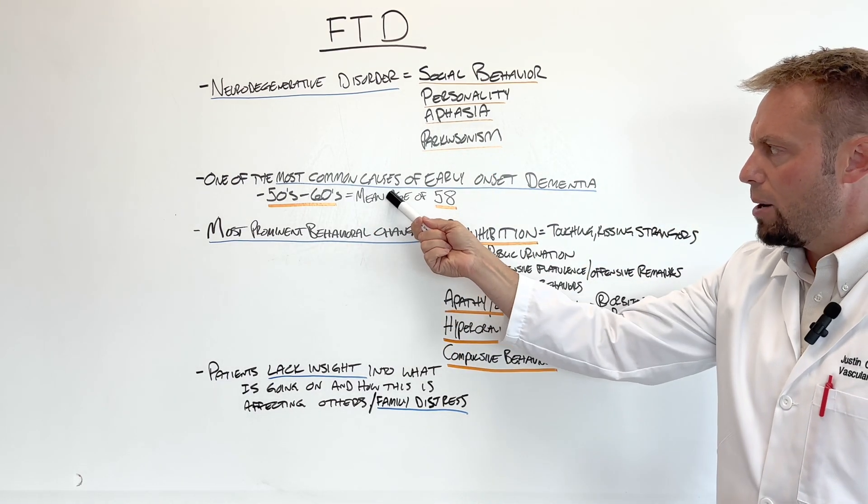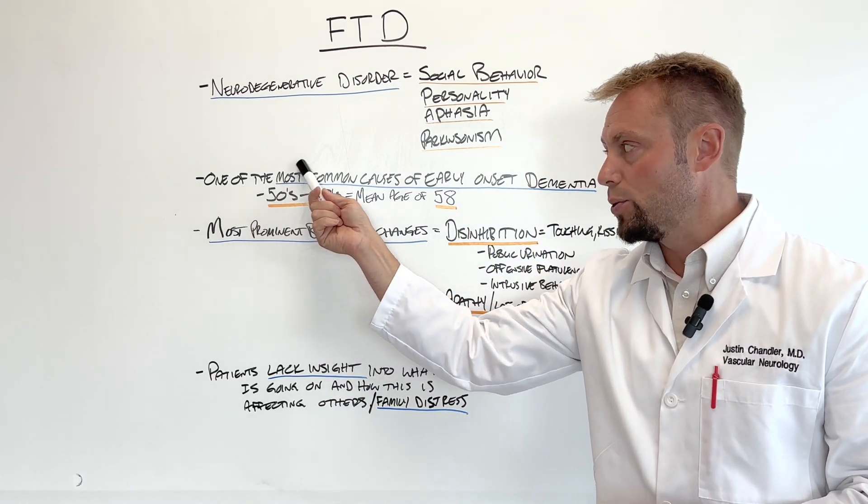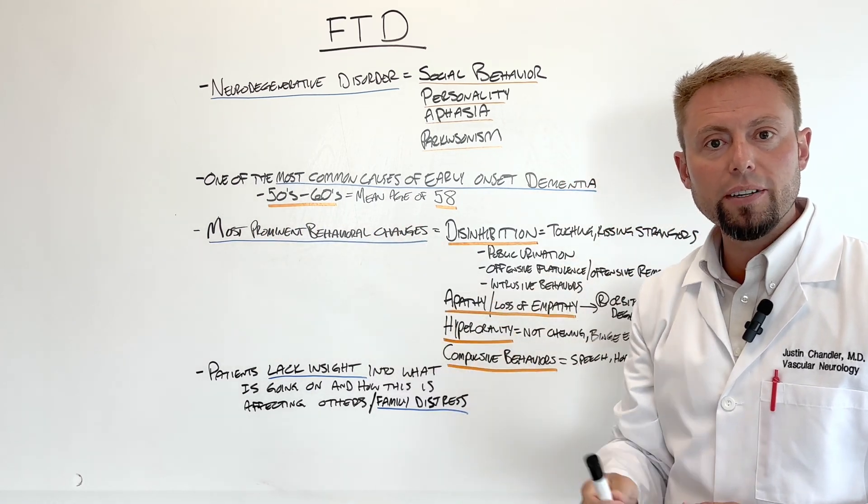It is one of the most common causes of early-onset dementia and typically presents when individuals are in their 50s and 60s, with the mean age being 58.